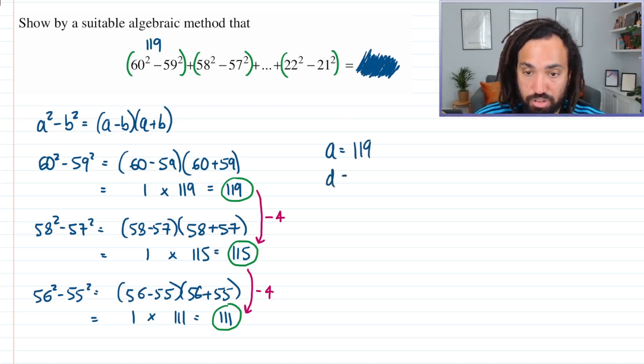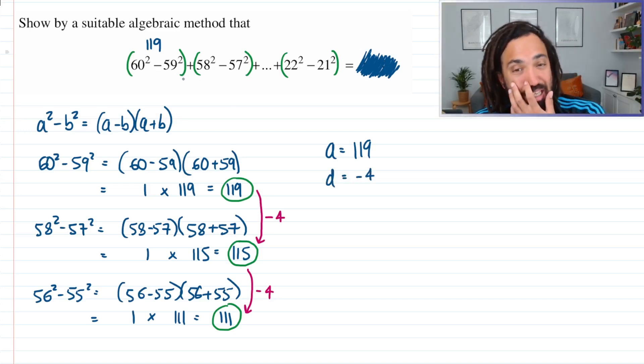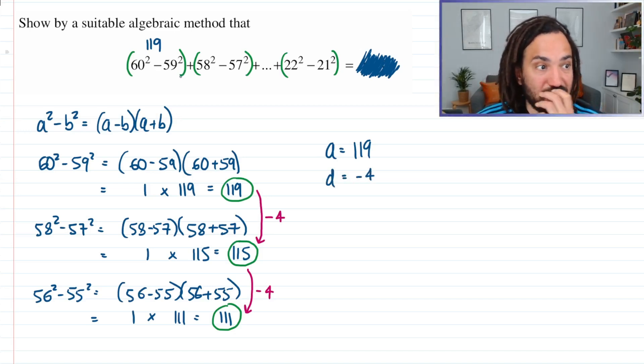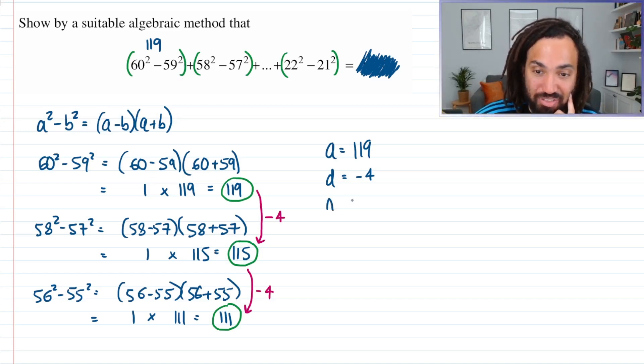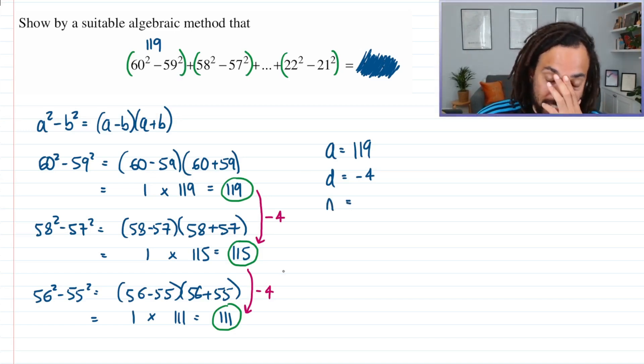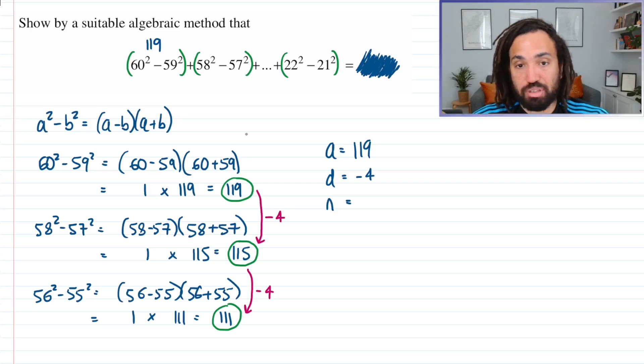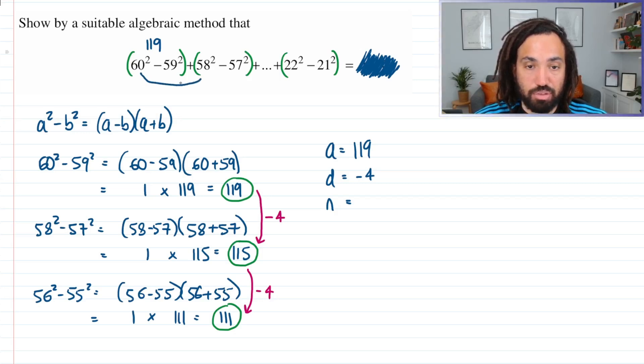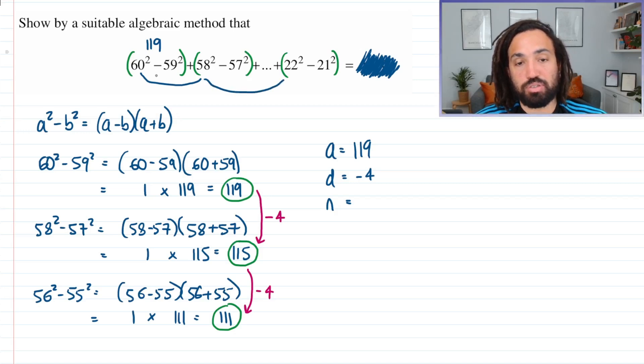But how many terms are there? Now this is something which, to be honest, I find quite tricky to figure out, particularly in exam situations - it can be quite stressful. It should be easy because you're just counting, but it can be quite stressful sometimes. So how are we going to figure this out? Well, if we look at the lead number, we've got 60, we've got 58, and it goes all the way down to 22, so obviously that's a gap of 2 between each of them.